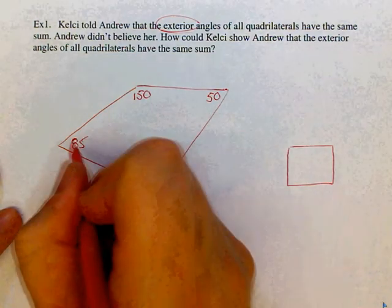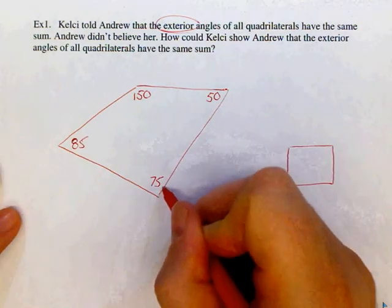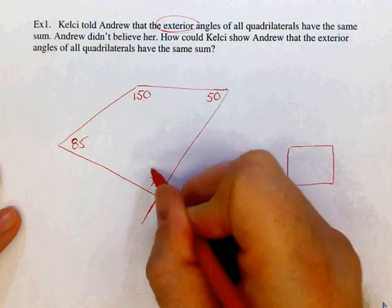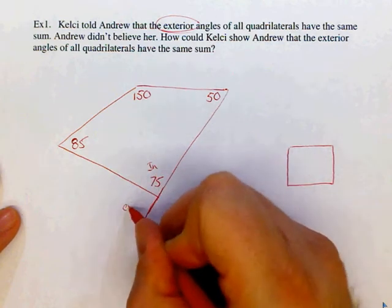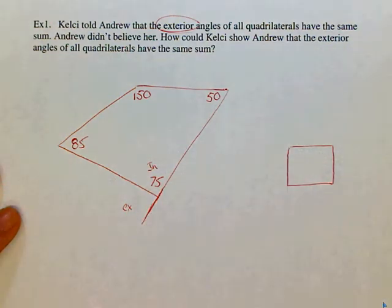Now if these are interior angles, if I was to extend my line, this would be the interior. This would be the exterior. This would be the interior. This straight line is 180 degrees.